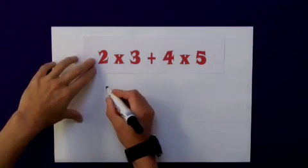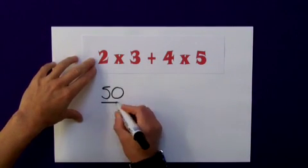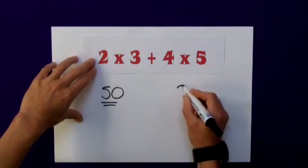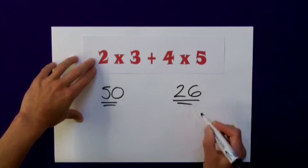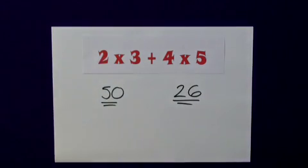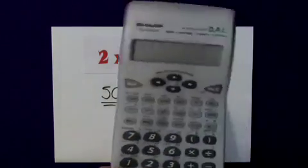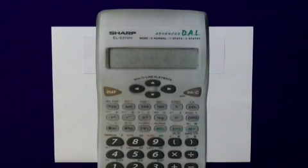So when I did it, I had an answer of 50. And when the calculator did it, it had an answer of 26. And clearly, they're not the same. But which one is correct? Well, in fact, the calculator has done this correctly, whereas I haven't.